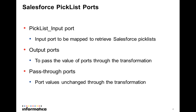The picklist transformation outputs a colon-separated list of valid values for picklist fields through the output ports. However, the picklist transformation does not require an input for delivering its functionality. Hence, a default input port is created so that it can be connected to an upstream transformation to complete the mapping pipeline. This field is called picklist_input_port.